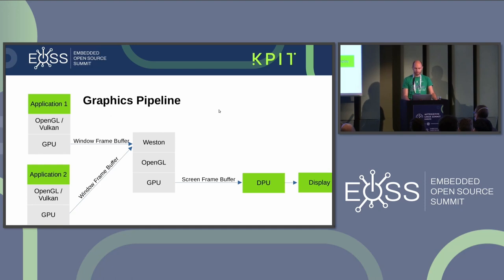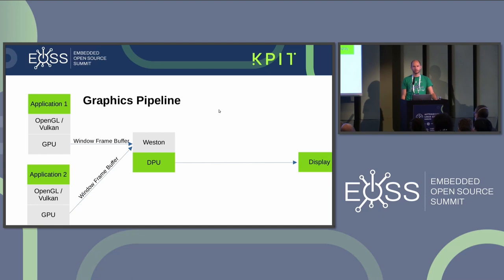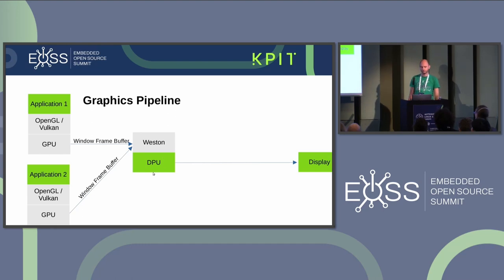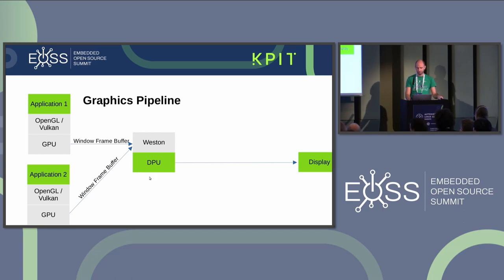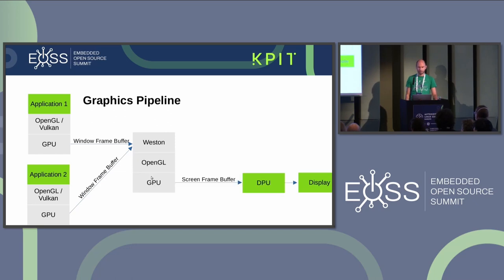Before I talk about that, I will show you a possible shortcut. In some scenarios it is possible that Weston uses the display processing unit directly to merge multiple windows. But there is a technical limitation: the number of windows that can be merged by the DPU is limited. If the number of software windows exceeds the number of so-called hardware planes on the display processing unit, then Weston will choose a hybrid compositing approach where some windows are merged with OpenGL and the GPU and some are merged by the DPU. For our safety considerations, we must consider the worst case — meaning we have to go through all the boxes — and I will show you how to make this safe.